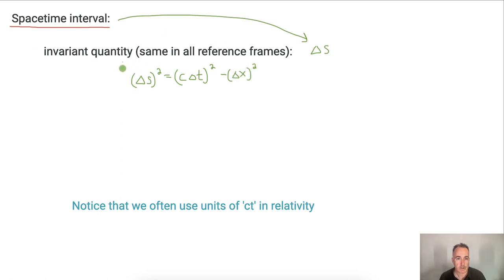This is an equation that you can use from your data booklet. Notice that we often like to use cT in relativity—units of cT. For example, when we're doing Minkowski diagrams or spacetime diagrams, these kind of things, we often put cT